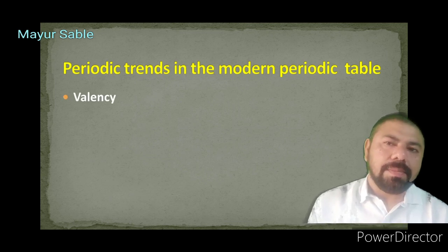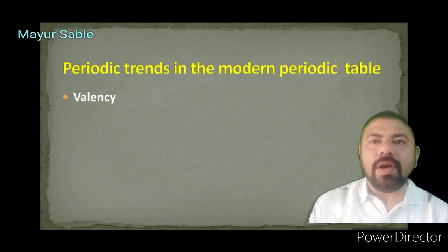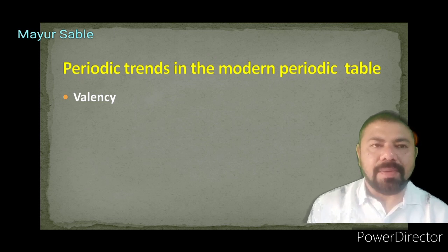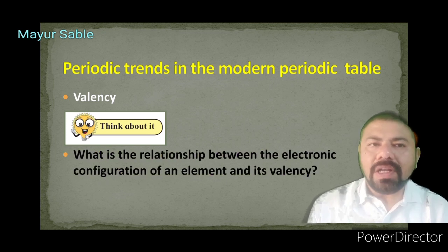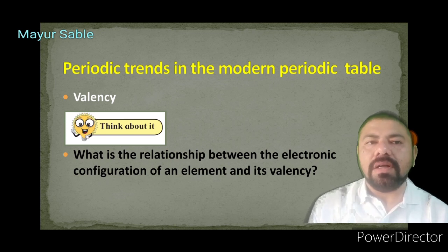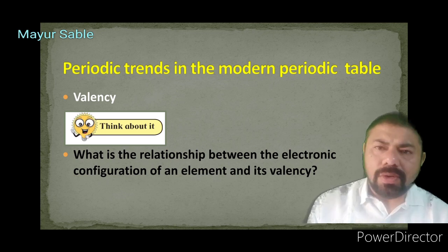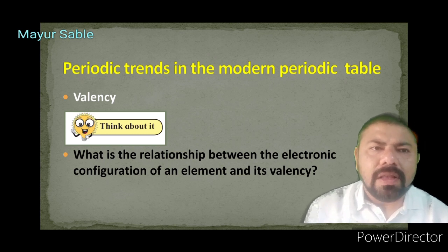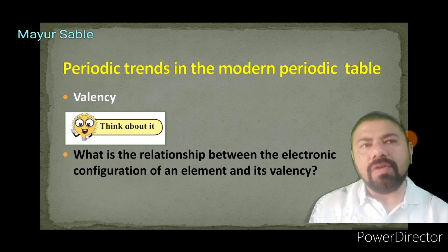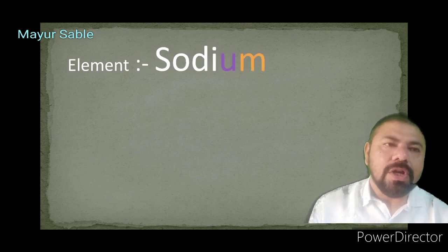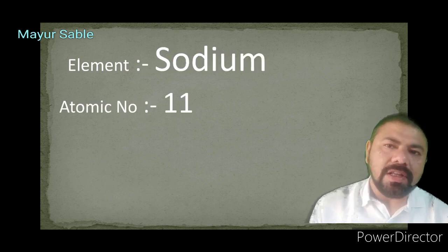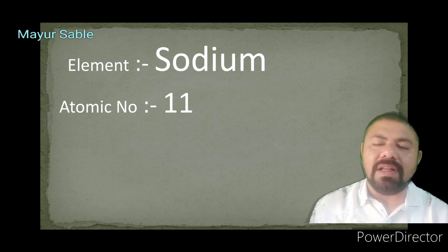We are going to study the periodic trend in valency, which is one of the important periodic properties of elements in the modern periodic table. In your textbook, under 'Think About It,' a question is given: what is the relationship between the electronic configuration of an element and its valency? The valency is determined on the basis of the electronic configuration. We will see one example first.